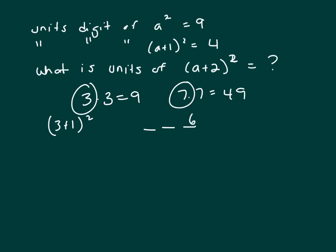Okay, what about 7? 7 plus 1 squared is 8², which is 64.